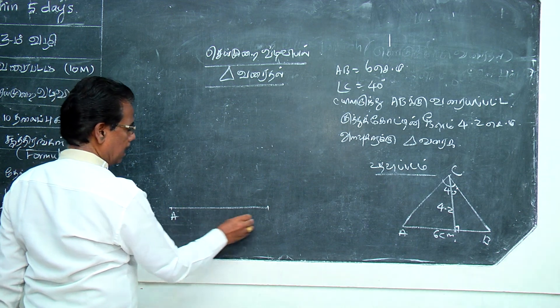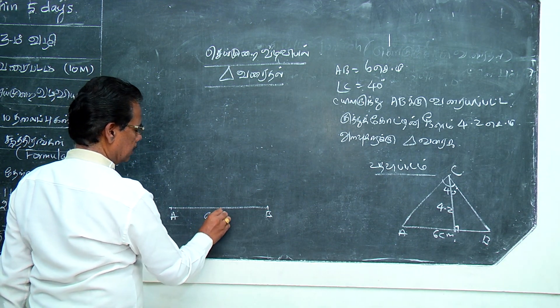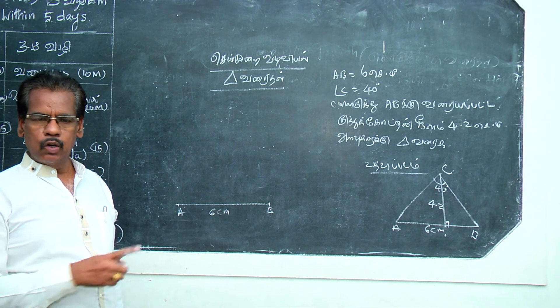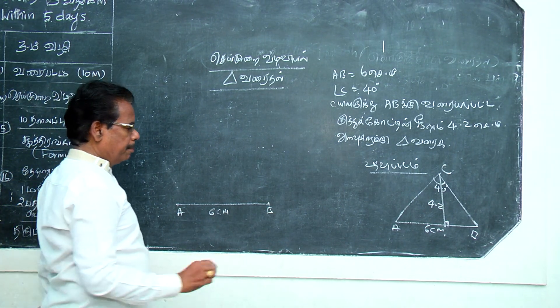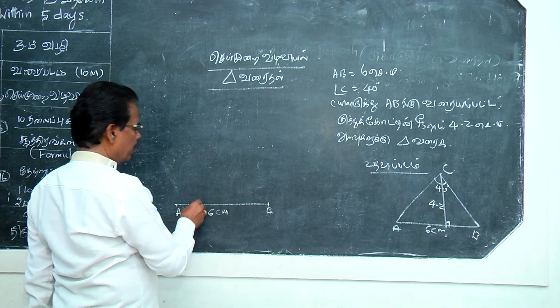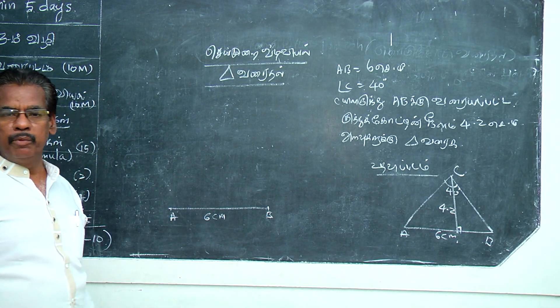This is 6cm. Now, AB is 6cm. You will put this arm. If this is 6cm, if you want to jump.